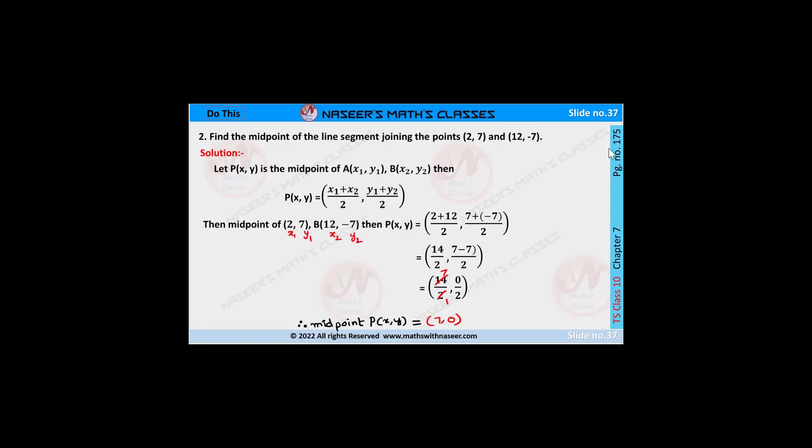Do this page number 175, chapter 7, coordinate geometry, second problem. Find the midpoint of the line segment joining the points (2,7) and (12,-7).